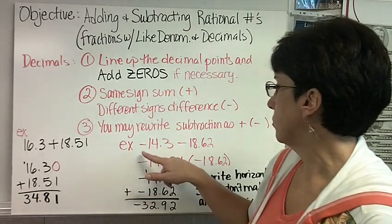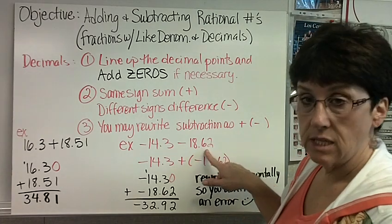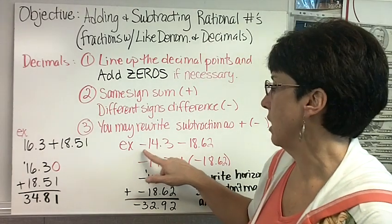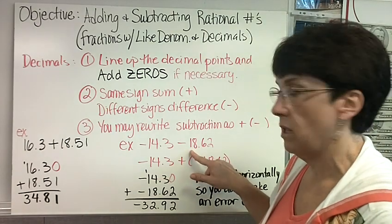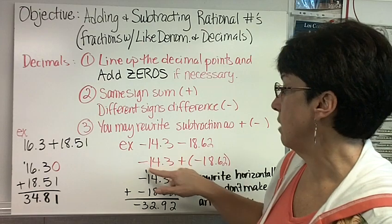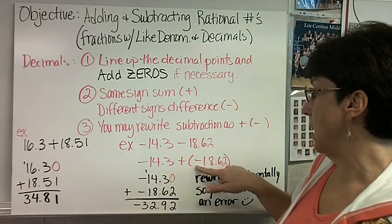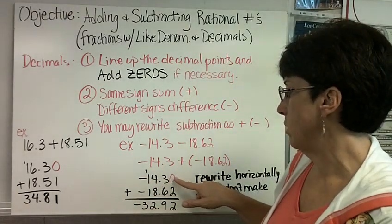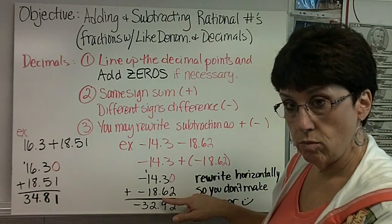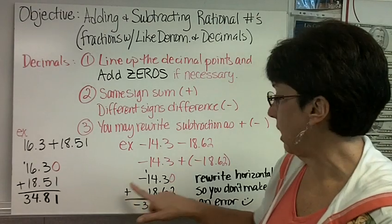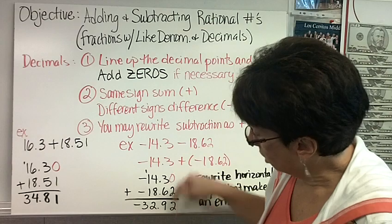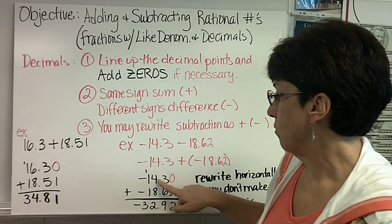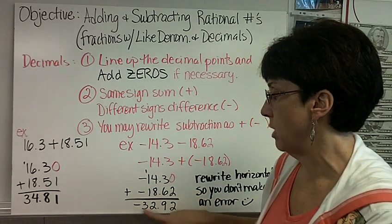So here's another example: negative 14.3 minus 18.62. Now I don't like it when there's a negative in front or when the number in front is smaller than the number coming afterwards. So I'm going to rewrite this as negative 14.3 plus negative 18.62. Once again, I write my numbers down vertically: negative 14.3, negative 18.62. I put a plus because I know I'm adding. I add a 0 after the 3 so that the columns line up. And I add: 0 plus 2 is 2, 3 plus 6 is 9, 4 plus 8 is 12, carry the 1, 1 plus 1 plus 1 is 3. Bring down the negative sign.